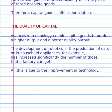Finally, we will talk about the quality of capital. Advances in technology enable capital goods to produce a higher output and better quality output. The development of robotics in the production of cars, for example, or in wholesale applications, has significantly increased the number of jobs that a factory can get. Over time, technology always improves and capital goods can produce better and more consumer goods.